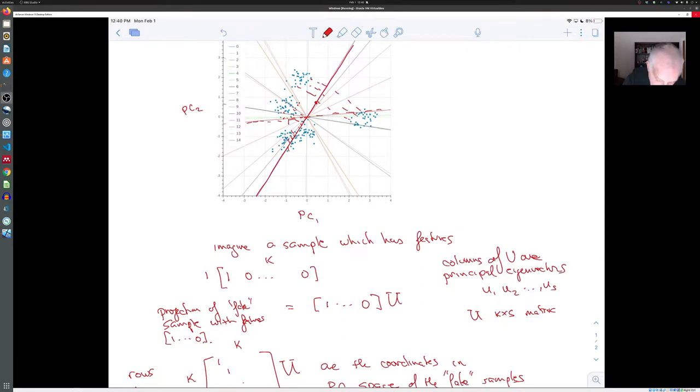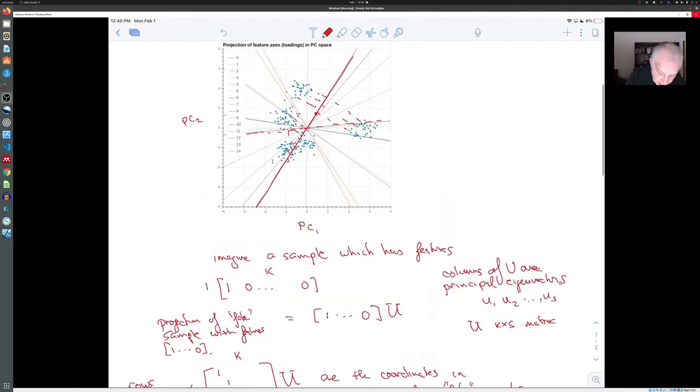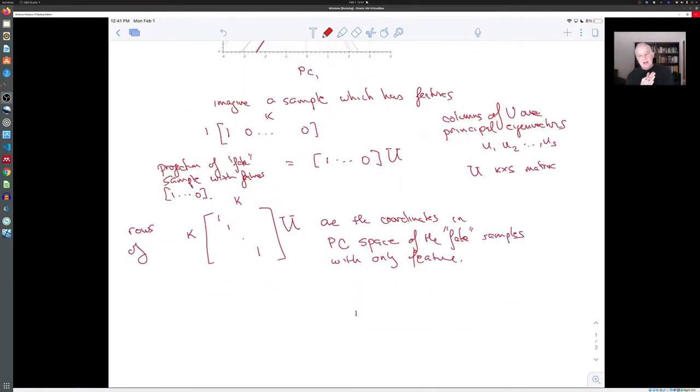And then if you draw the line, which connects the origin to those fake samples, that corresponds to multiples of that fake sample, which has only one feature in a one in one position and zero elsewhere.